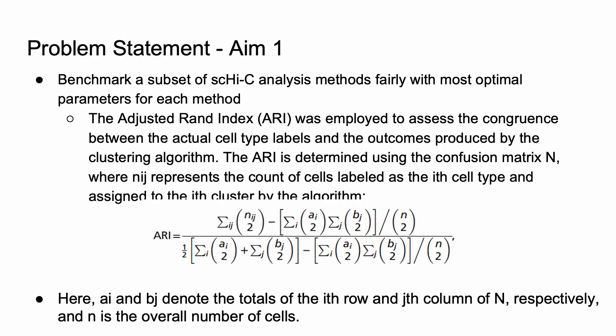Our problem statement consists of two aims. Our initial aim is to benchmark a subset of single cell Hi-C analysis methods fairly with the most optimal parameters for each method. To evaluate the performance of the methods, we will be using the ARI metric, which is determined by using the confusion matrix where N_IJ represents the count of cells labeled as the i-th cell type and assigned to the cluster by the algorithm, as seen in the equation below. Here A_I and B_J denote the totals of the i-th row and the j-th column of N respectively, and lowercase n is the overall number of cells.